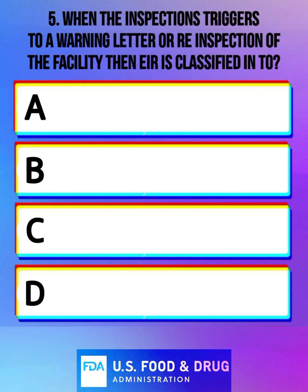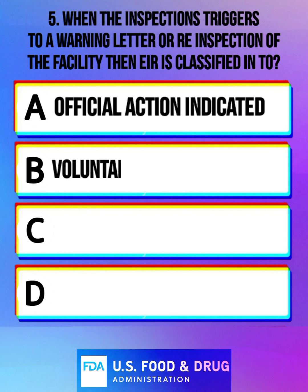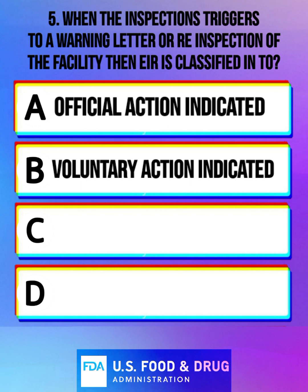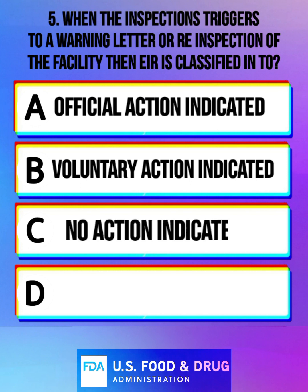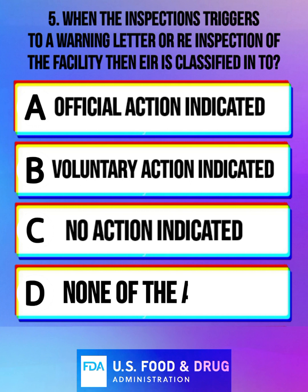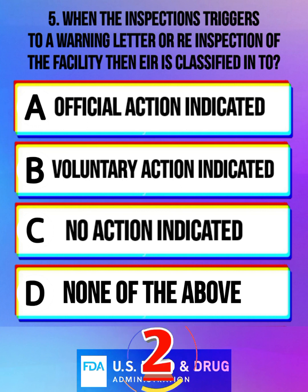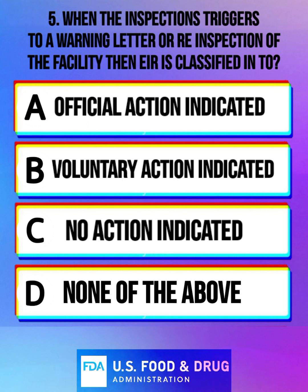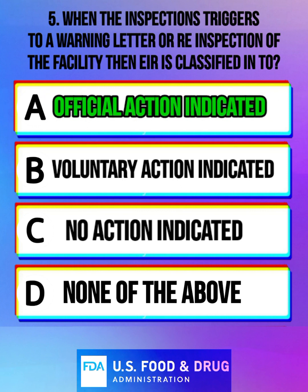When the inspection triggers to a warning letter or re-inspection of the facility, then EIR is classified into: Option A: official action indicated. Option B: voluntary action indicated. Option C: no action indicated. Option D: none of the above. And the correct answer is official action indicated.